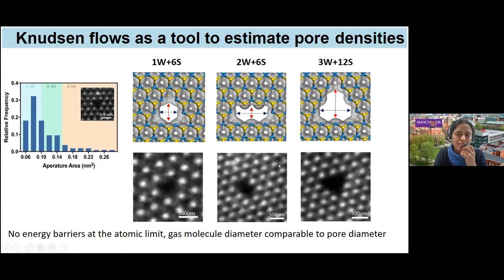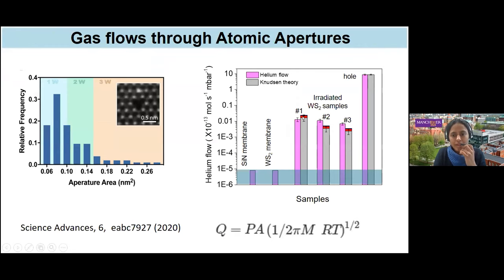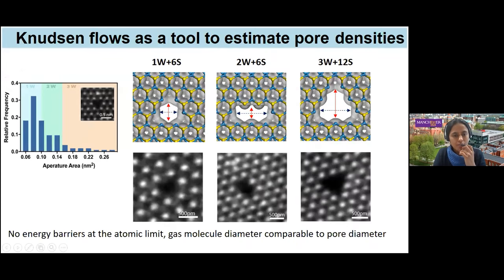This is the first time the Knudsen description has been validated experimentally by direct comparison to atomic-scale systems, rather than simply applying mathematical formulae derived for infinite tubes. Additionally, this work provides a practical tool: since transmission electron microscopy cannot cover large areas, we can back-calculate pore densities from gas flow measurements and correlate with TEM inspection, enabling inspection of large areas of angstrom-scale pore systems.